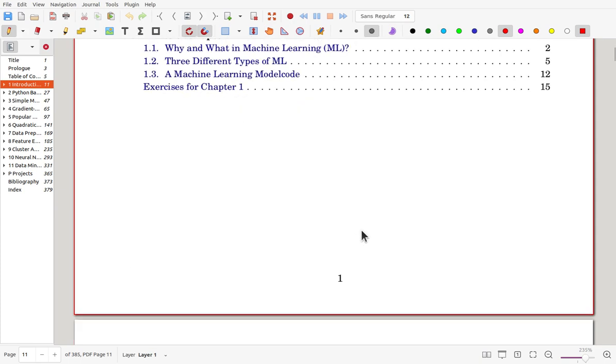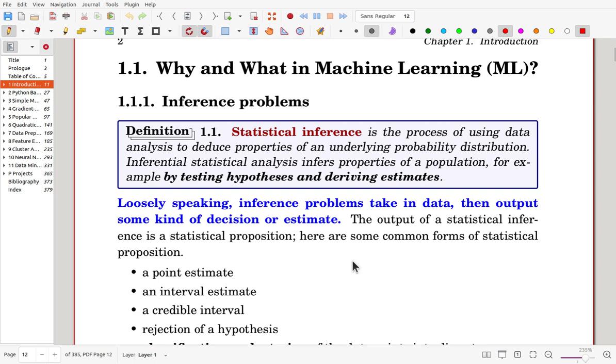and models are sort of representations of data sets. Here, in section 1.1, we consider these two aspects. Why and what in machine learning? Inference problems. Statistical inference, by definition, is the process of using data analysis to deduce properties of an underlying probability distribution. Roughly speaking, inference problems take in data,